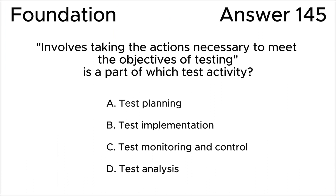To answer this question, it's enough to remember what each phase includes. The correct answer is C. Involves taking the actions necessary to meet the objectives of testing is a part of test control, according to the ISTQB syllabus.